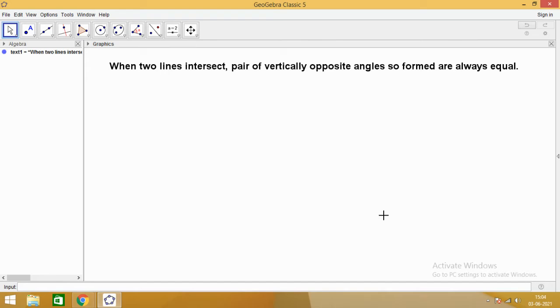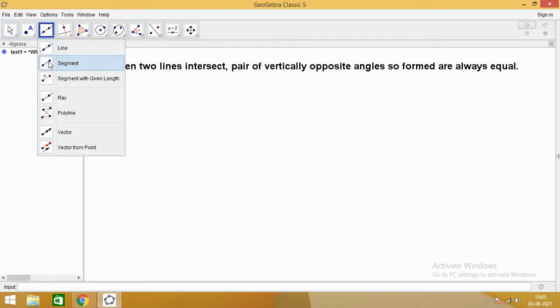How are you? Hope you are doing well. So today we are going to do an experiment about a statement which we have studied in geometry. When two lines intersect, pair of vertically opposite angles so formed are always equal.